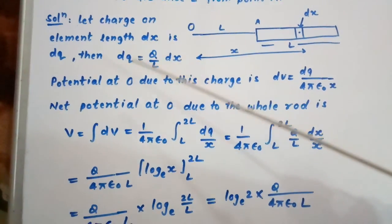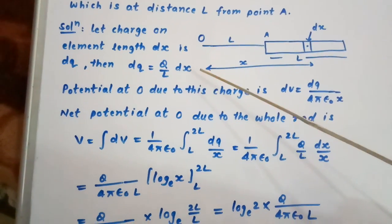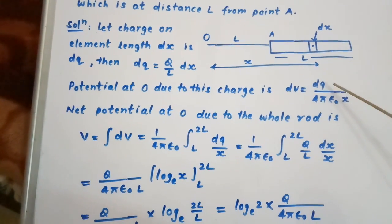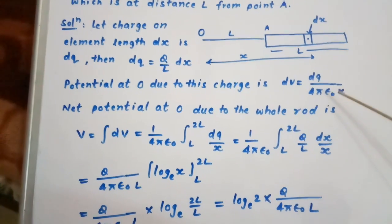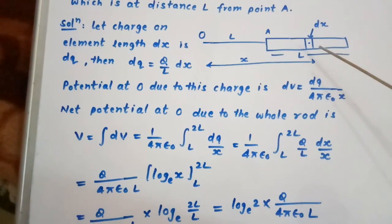Let charge on element length dx be dq. Then dq equals Q upon L times dx. Potential at O due to this charge is dV equal to dq divided by 4πε₀x, because distance of point O from this element is x.